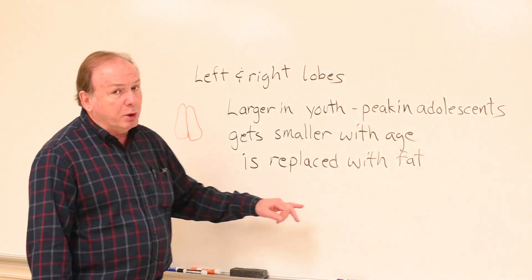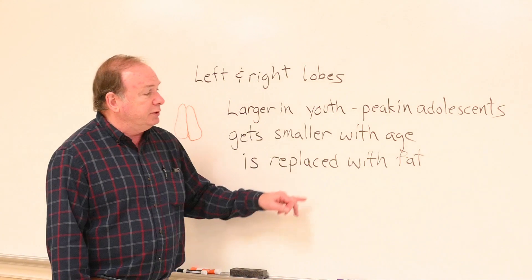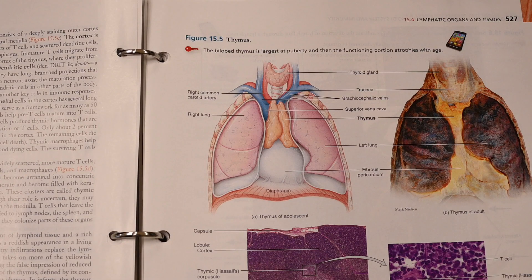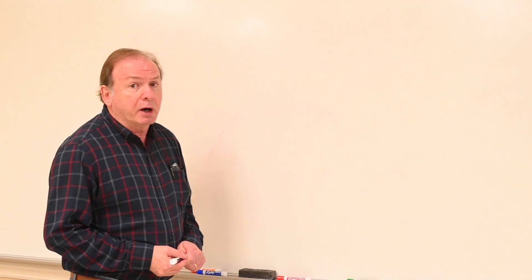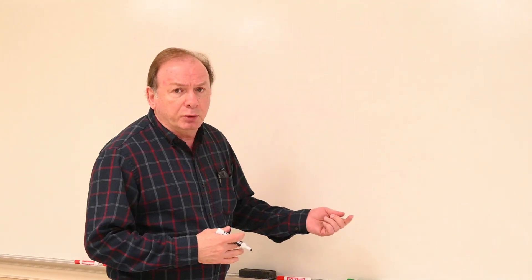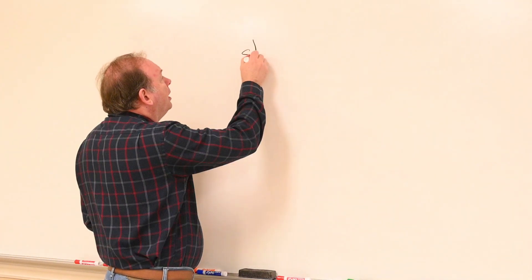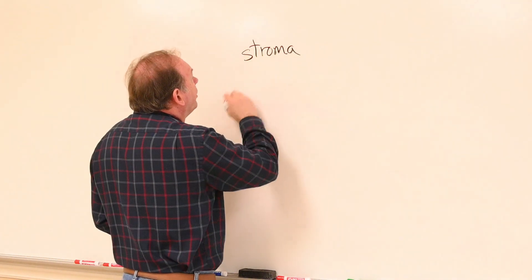A picture from the textbook shows the position of the thymus between the two lung cavities in the upper portion of the thoracic region. Notice that it is made of two separate lobes, a left lobe and a right lobe. The next topic we need to take up with regard to the thymus and comparing it to some other organs is the concept of stroma and parenchyma.